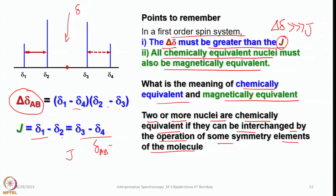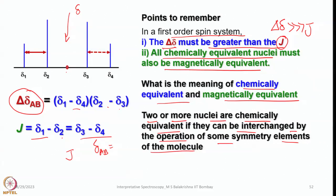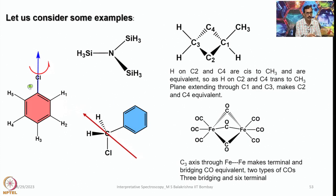Now let us consider some examples. In chlorobenzene, if we consider the C₂ rotational axis and perform a C₂ rotation, H1 and H5 are indistinguishable. Similarly, H4 and H2 are indistinguishable — these two are chemically equivalent, and those two are chemically equivalent. All hydrogens in equivalent positions are chemically equivalent.